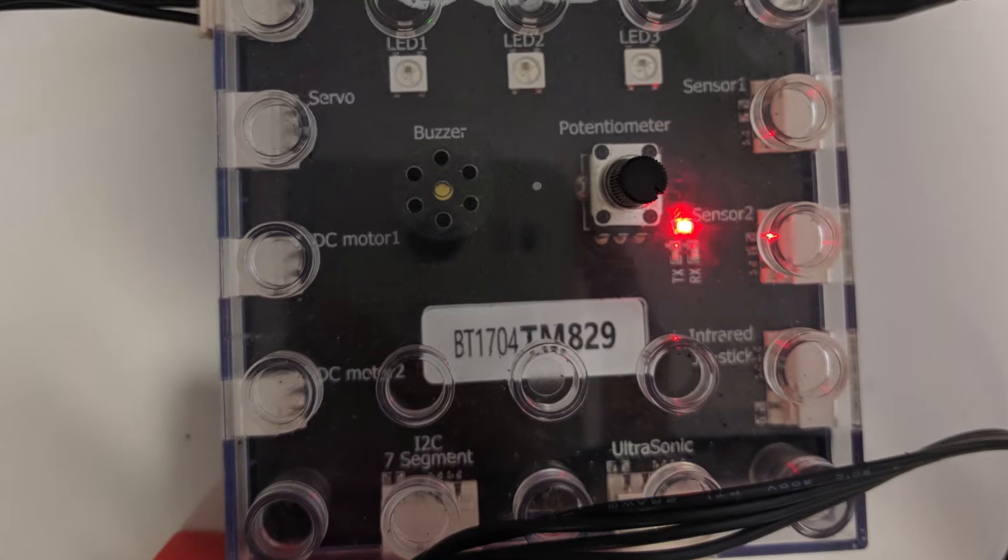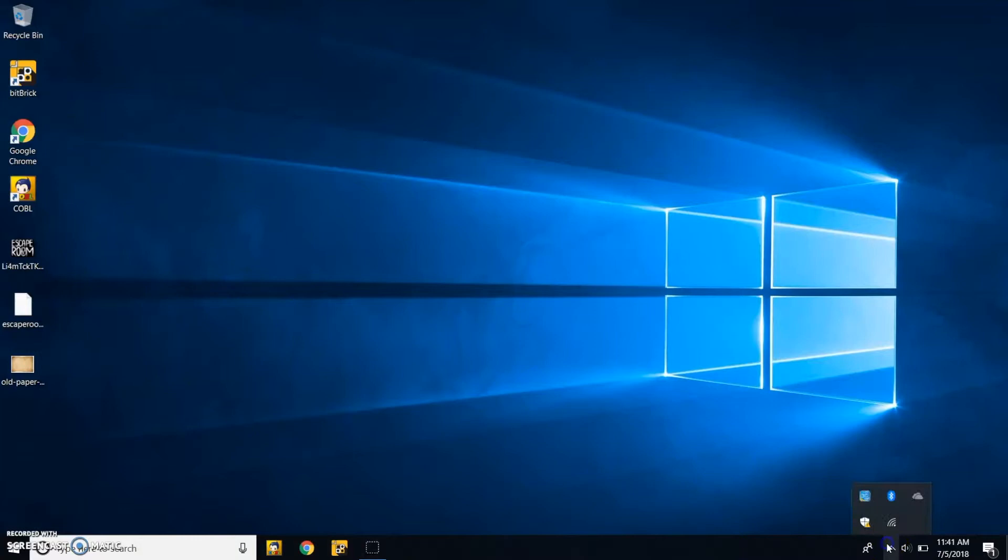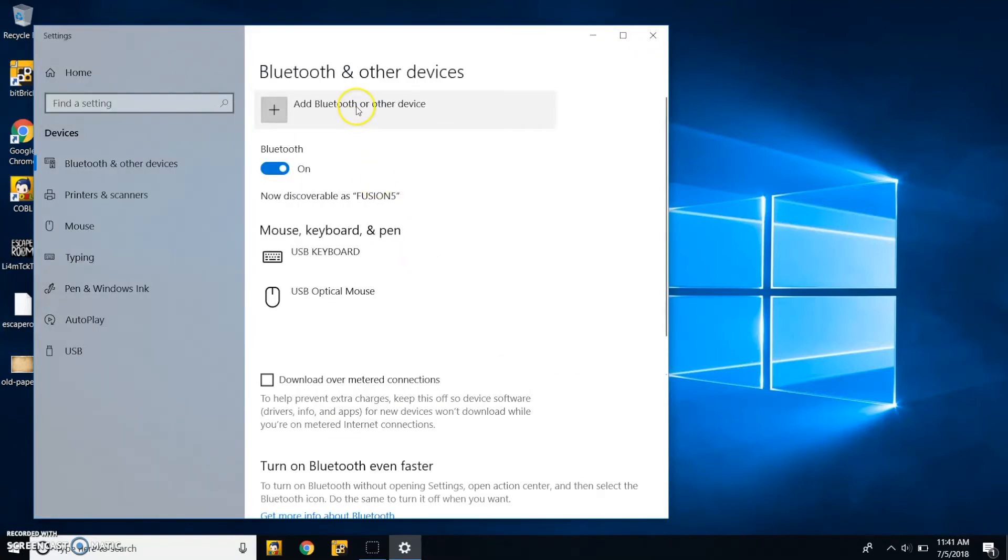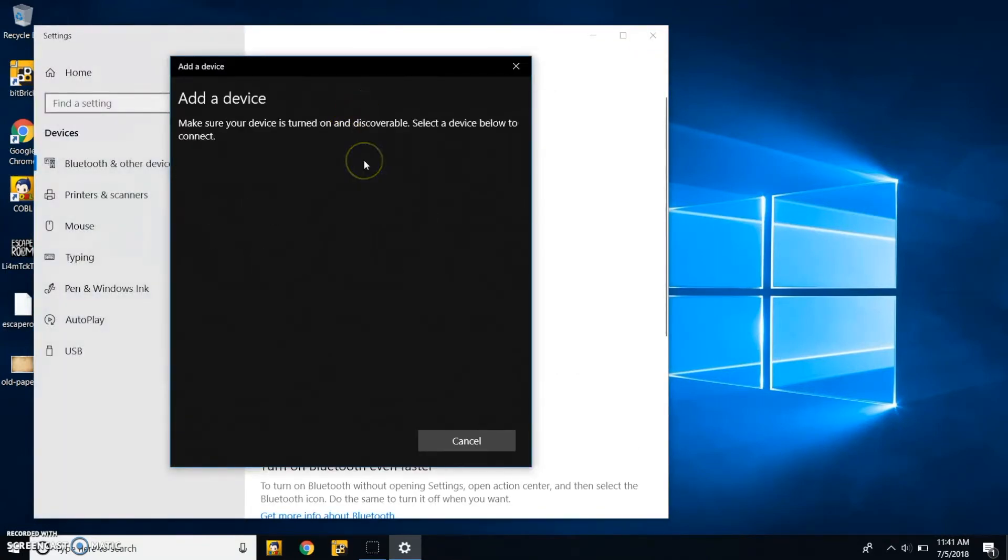The name of the cobalt CPU is written on the sticker inside, TM829. Go on your laptop and select the bluetooth icon and add a bluetooth device. Wait for your device to pop up. TM829. And the pin is 1234 for all cobalt CPUs.